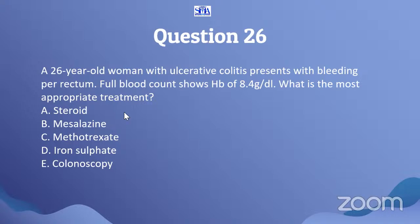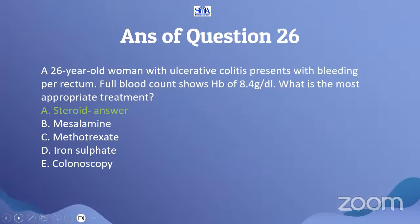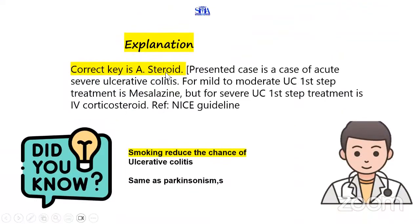The diagnosis is ulcerative colitis, and the patient presents with bleeding per rectum. Well done - steroid is the answer. The presented case is acute severe ulcerative colitis. If you find an acute flare-up condition, the answer will always be steroid. If you find mild to moderate but not acute flare-up, then mesalazine can be the answer. Later, azathioprine can also be used.